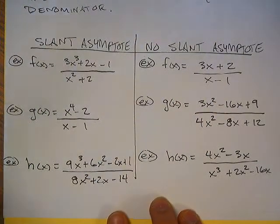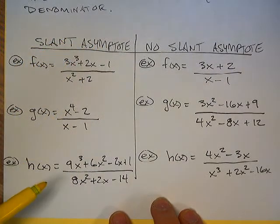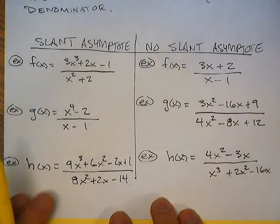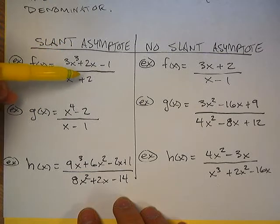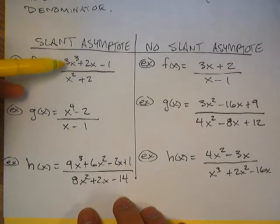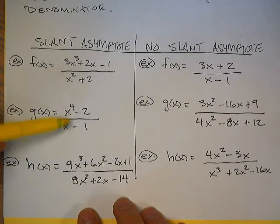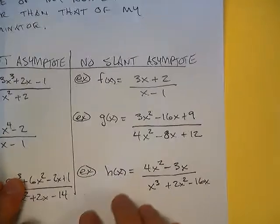For the very first example, we are going to have a slant asymptote — all the ones in this column here have slant asymptotes, and the ones over here have just regular horizontal asymptotes. We take the degree of our numerator — remember, the degree is given by the highest power on the exponent. Here the biggest exponent in the numerator is 3, so this is degree 3 on top and degree 2 on the bottom — slant asymptote. Fourth degree on top, first degree on the bottom — slant asymptote. Third degree on top, second degree on the bottom — definitely a slant asymptote.